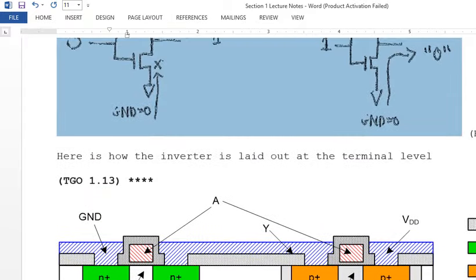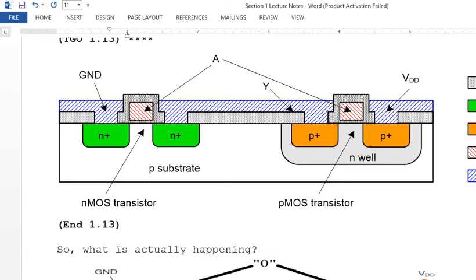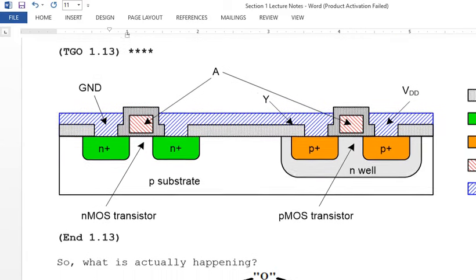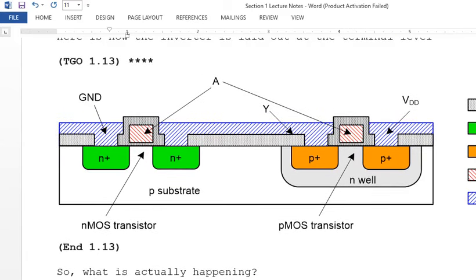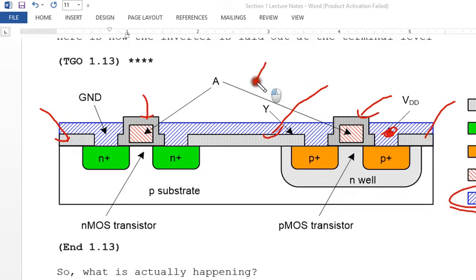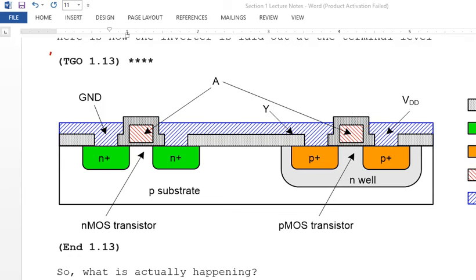Section 1.13 covers the actual physical layout of the inverter. Silicon dioxide (SiO2) surrounds all components to provide a buffer. VDD is connected through metal, you have a metal output, and polysilicon inputs — in this case both labeled A — are used to create the channels.